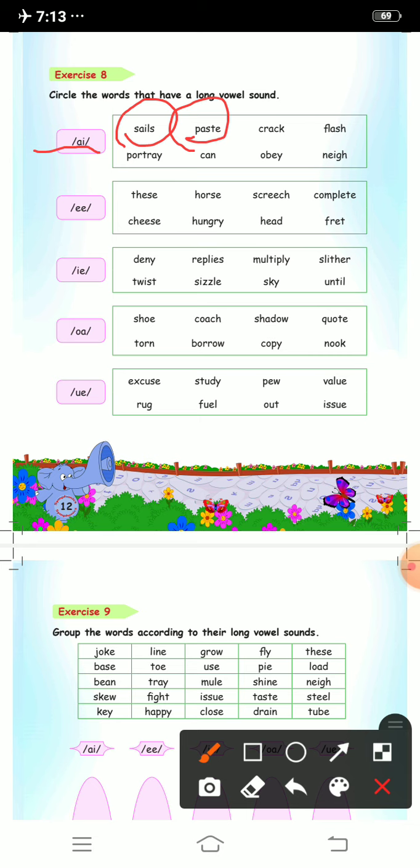Crack, no, you will not circle this word. Flesh, no. Pot tray, yes, you will circle this. Can, no. Obey, yes, it makes a sound. Then neigh, yes, it also makes the a sound, so you will circle this word.